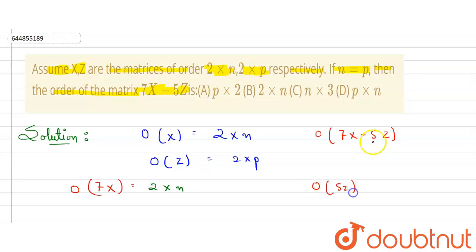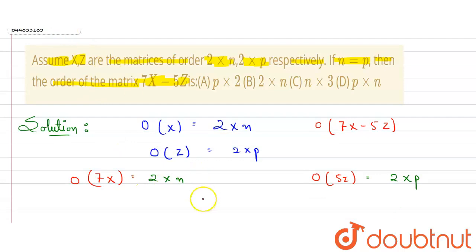Now if I want to find order of 5Z matrix, because we need to subtract 5Z matrix, its order will also be the same because we are just multiplying the Z matrix with 5. It will not change our order, so it will be 2 × p.